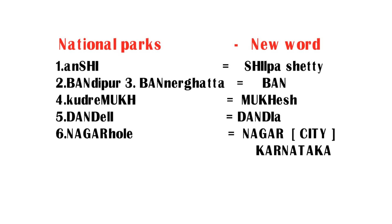Now I'm going to frame all six new words into a story. This story is based on IPL. You know that Shilpa Shetty is the owner of Rajasthan Royals and Mukesh Ambani is the owner of Mumbai Indians. So the story is: Shilpa Shetty's team is banned from IPL, so Mukesh Ambani is feeling very happy and he is doing Dandia with Nita Ambani in the city of Karnataka. If you remember this story, you can easily remember all six national park names.